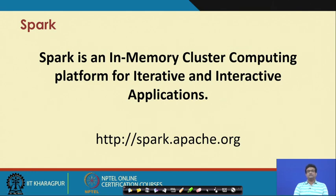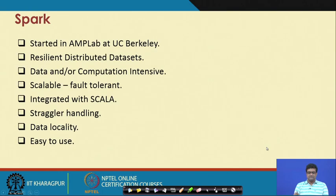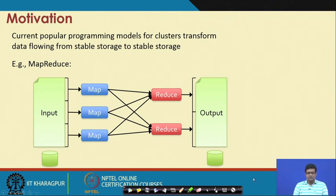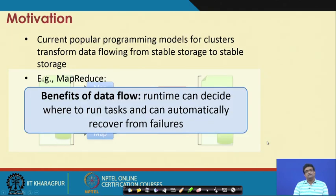Spark is a distributed in-memory cluster computing platform for iterative and interactive applications. We have discussed the origins and properties of Spark and its background. We have seen that the benefit of the MapReduce programming model is that the runtime can decide where to run the tasks and it can automatically recover from failures.